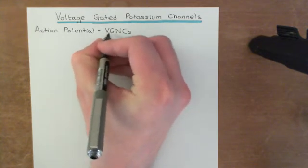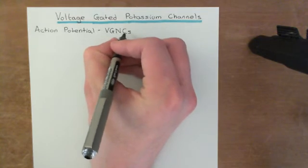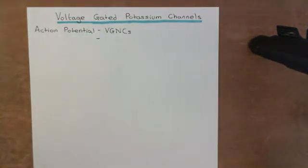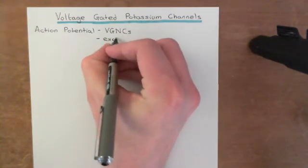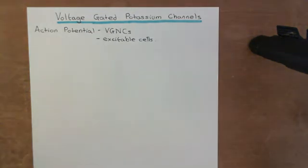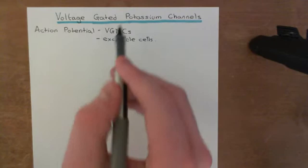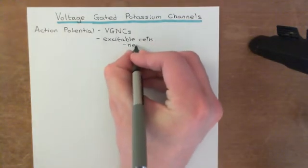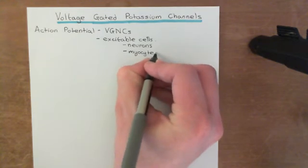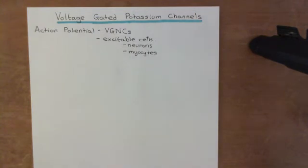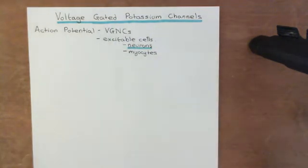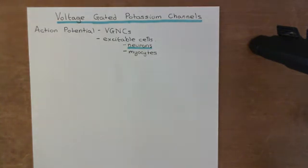VGNC stands for voltage-gated sodium channels. At least this is the case for neurons. In the heart it's a little more complicated — heart cells are another example of what are known as excitable cells, which are cells capable of performing an action potential. We're going to study specifically neurons rather than cardiac muscle cells. Myocytes — not just cardiac myocytes but also skeletal myocytes — are also capable of action potentials. Neurons have both voltage-gated sodium channels and voltage-gated potassium channels, and these are what are needed to fire an action potential.